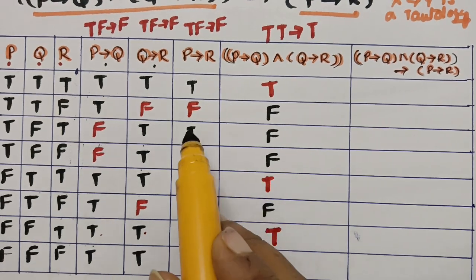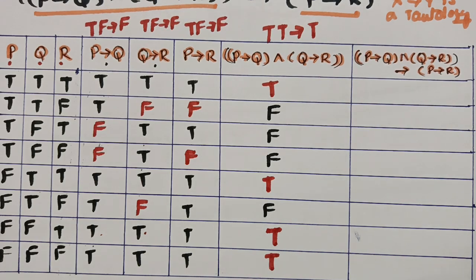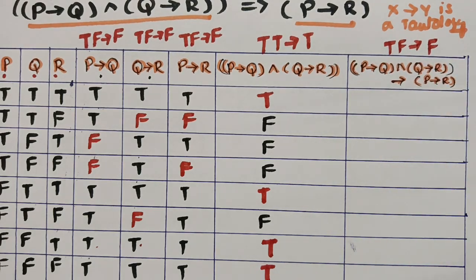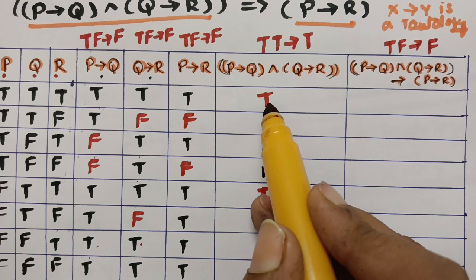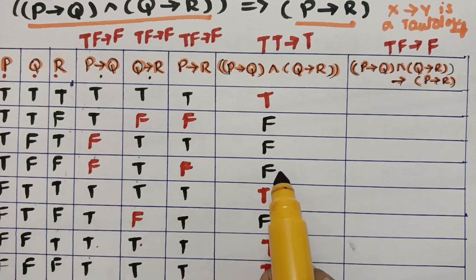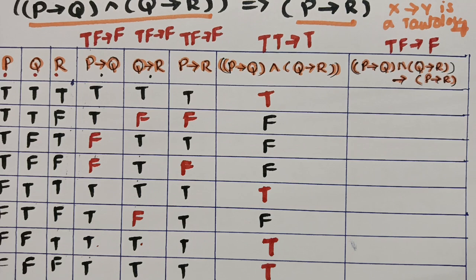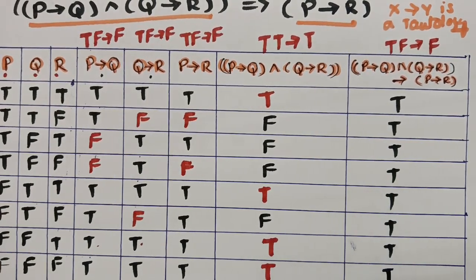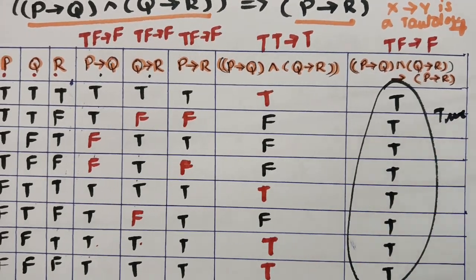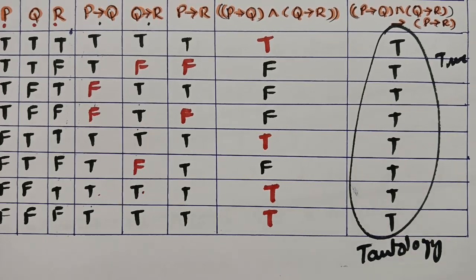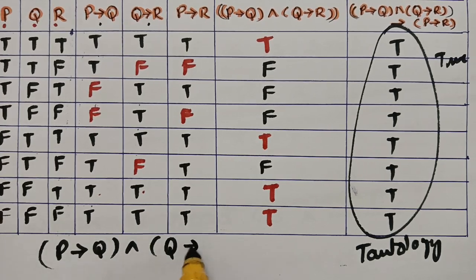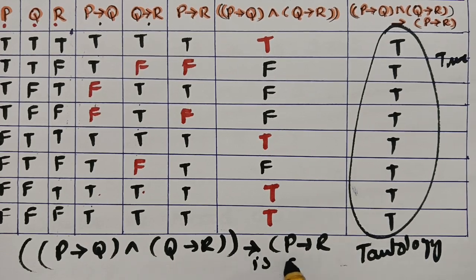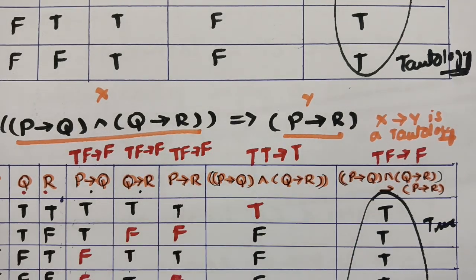Now check the implication between x = (p→q)∧(q→r) and y = (p→r). For implication, if the first is true and the second is false, write false. Checking all rows: no true-false pair is found. So write the opposite — all true. Since the end statement is all true, this is a tautology, confirming (p→q)∧(q→r) double implies (p→r).